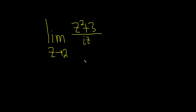In this problem, we have to find the limit of this complex value function as z approaches 2. The general rule for limits is if you can take this number and plug it in and get an answer, then go for it. So in this case, we can plug in the 2. There's no funky division by zero, there's no issues at all.